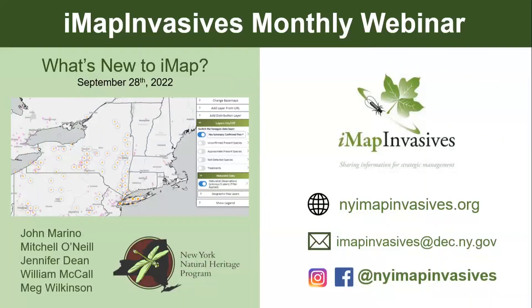Thank you so much to everyone for joining. This is the IMAP and Basis monthly webinar for September, and today we'll be talking about what's new to IMAP. Today we'll hear from myself, Mitchell O'Neill, with the New York IMAP and Basis team, and also several other team members: John Marino, Jennifer Dean, William McCall, and Meg Wilkinson. Please feel free to enter any questions into the chat box, and we'll be happy to go through those as we go through the webinar.